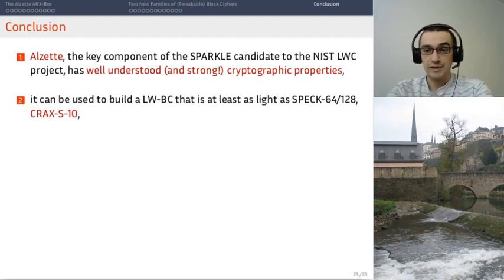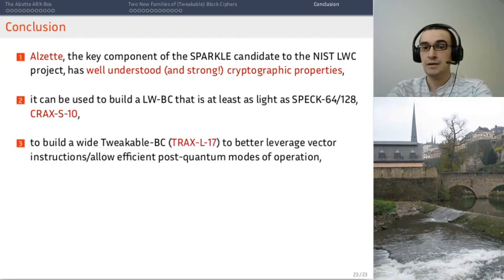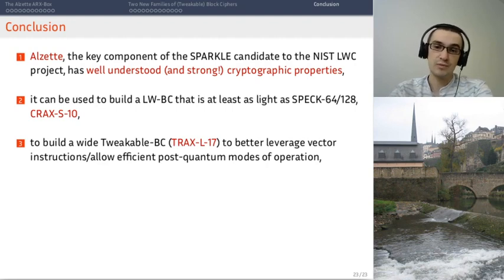ALZET can also be used to build a lightweight block cipher, which is arguably at least as light as Speck. It can also be used to build a wide tweakable block cipher, which will allow you, since the modes are parallelizable, to better use vector instructions. And also, the wider block size is very interesting for people who work on post-quantum symmetric crypto. So, that's another context in which T-RAX could be useful.